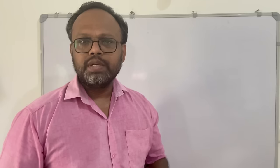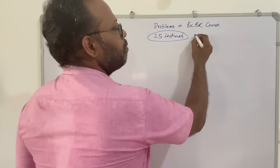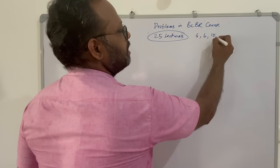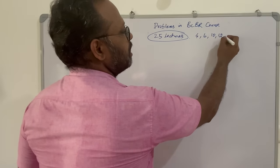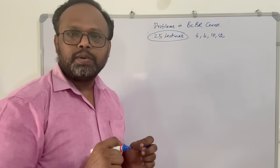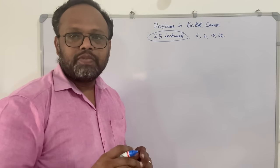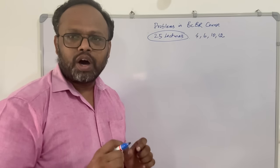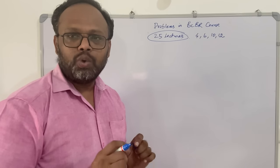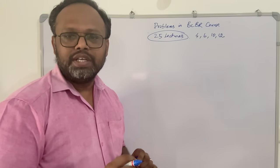Your BCBR course consists of 25 lectures. Problems appear in the 4th lecture, 6th lecture, 10th lecture and 12th lecture. We will see the formulas clearly, and some problems I can explain with examples. We will see the formulas, their proper understanding, how to apply them correctly, and where you will make mistakes — all of that will be discussed.